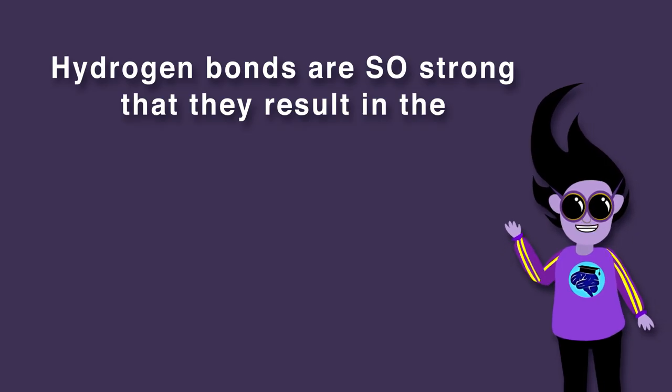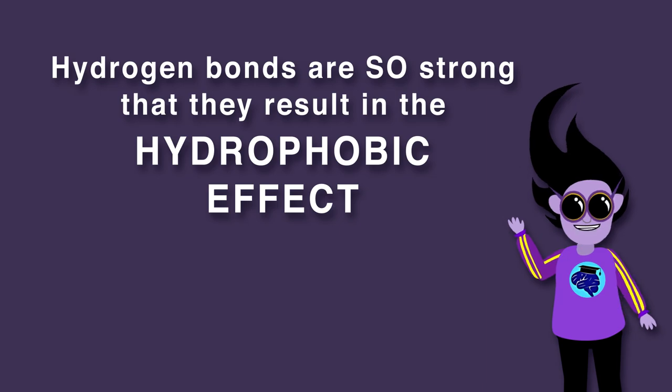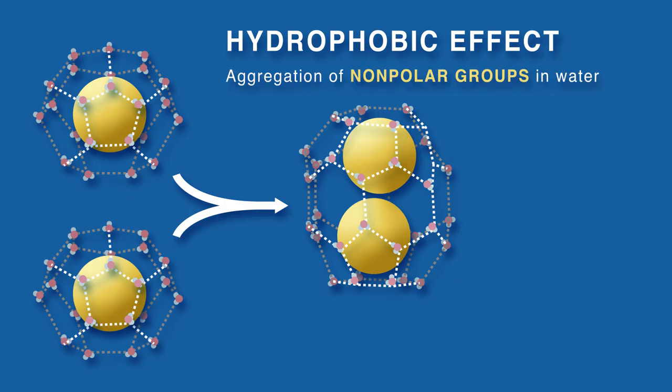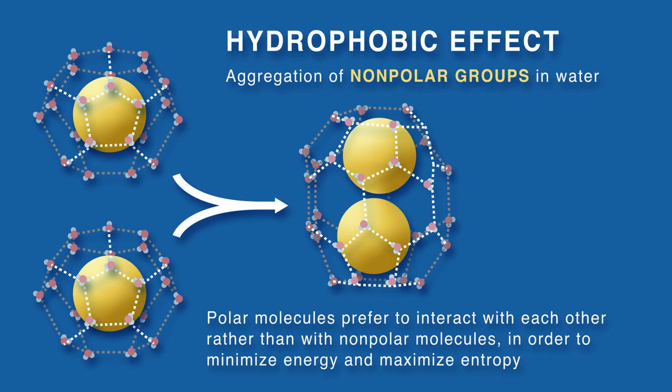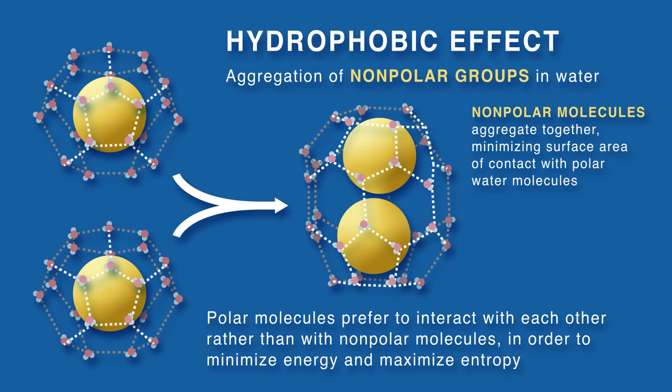Hydrogen bonds are so strong that they result in the hydrophobic effect, that is, aggregation of nonpolar groups in water. This is because polar molecules prefer to interact with each other rather than with nonpolar molecules in order to minimize energy and maximize entropy. So, nonpolar molecules aggregate together, minimizing surface area of contact with polar water molecules.